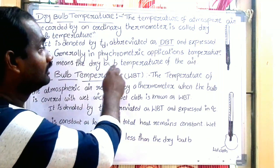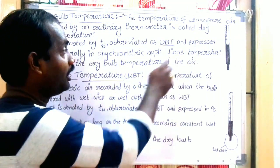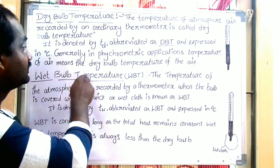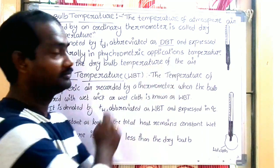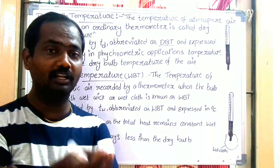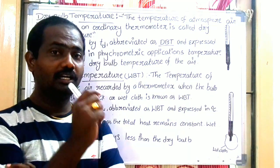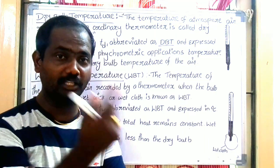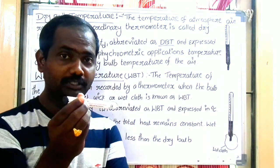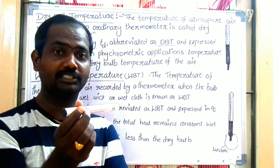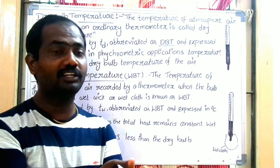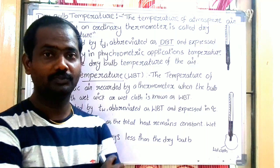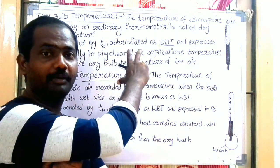Generally, in psychrometric applications, the temperature of air means the Dry Bulb Temperature of air. So in general, when we measure the temperature of the atmosphere with a thermometer, it defaults to Dry Bulb Temperature.